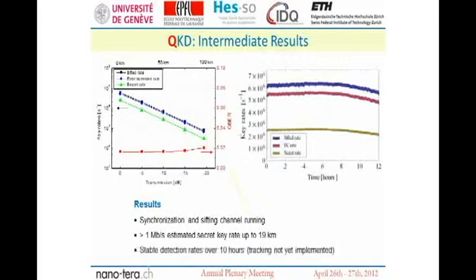I summarize the intermediate results of the QKD part of our project. The synchronization and sifting channel is running. Sifting is the management of the photons that have been sent. More than one megabit per second estimated secret key rate is possible up to 19 kilometers. The key rate becomes lower with distance, but the system can work at long distances with a somewhat lower key rate.